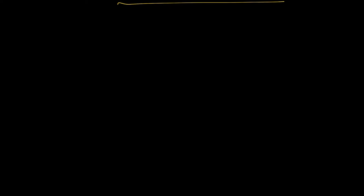Up until now we've been talking about waves that are produced by vibration of something - atoms or molecules - like sound waves or water waves. Electromagnetic waves are quite different. They're produced by repeated variations in electric and magnetic fields.